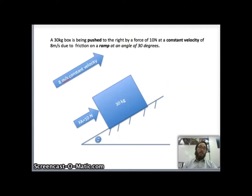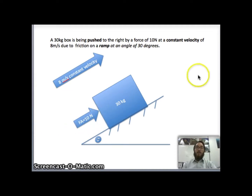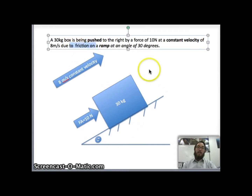Here's an example of a ramp problem. A 30 kilogram box is being pushed to the right by a force of 10 newtons at a constant velocity of 8 meters per second, due to friction, on a ramp at an angle of 30 degrees. We have a force applied here of 10 newtons being pushed up the ramp. We also have friction, and friction always opposes motion, so it will be going down the ramp.